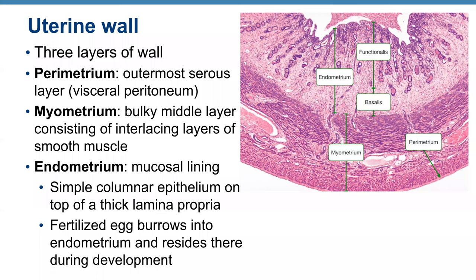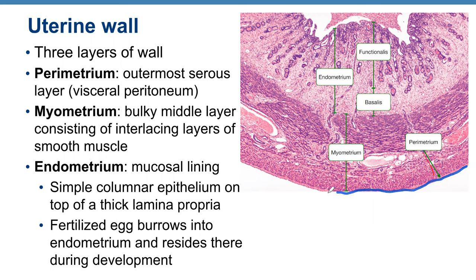The perimetrium is a very thin layer of simple squamous epithelium and areolar connective tissue. The myometrium has several layers of smooth muscle. The endometrium has two chief layers: the stratum functionalis (functional layer) and the stratum basalis (basal layer). Changes in the stratum functionalis occur in response to ovarian hormone cycles, and it is shed during menstruation.